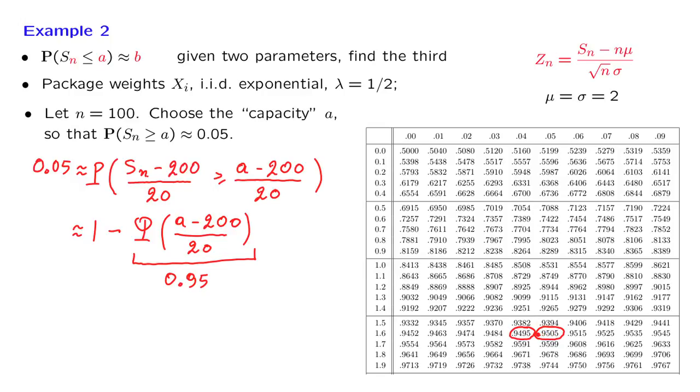And so we conclude that in order for this to be 0.95, we need a minus 200 divided by 20 to be equal to 1.645. And then we solve for a, and we find that a should be 232.9. And we can choose the capacity of our container this way.